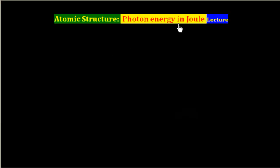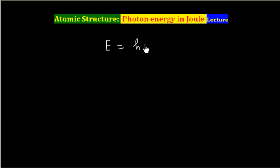The energy of a photon in Joules is given by the formula E = hν, and this is given by Planck, so this is Planck's formula.